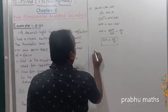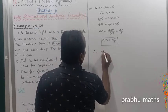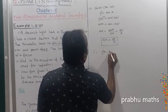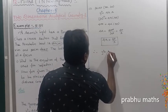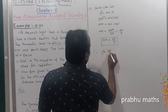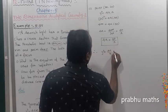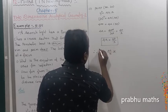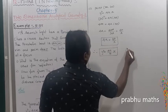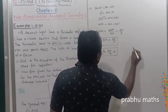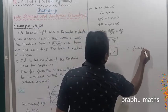Therefore, y squared is equal to 400 divided by 3 into x. The first question is completed. The general form is y squared equals 4Ax.